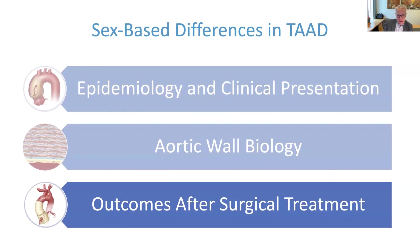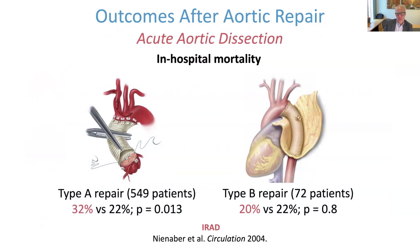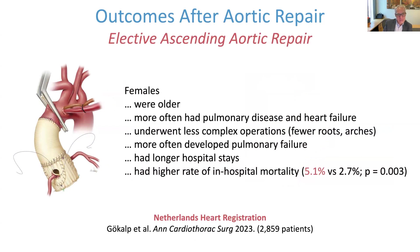Focusing on differences in outcomes after surgical treatment: for acute aortic dissection, women have a much higher risk of in-hospital mortality at 32% compared to 22% in males for type A or ascending dissection repair. For elective ascending aortic aneurysm repair, females were noted in a Netherlands heart registration study to be older, more often have pulmonary disease and heart failure, and underwent less complex operations — fewer concomitant root repairs and arch repairs. They more often developed pulmonary failure after surgery, had longer hospital stays, and nearly double the rate of in-hospital mortality.